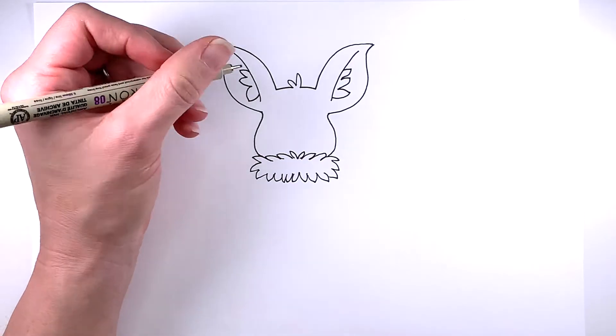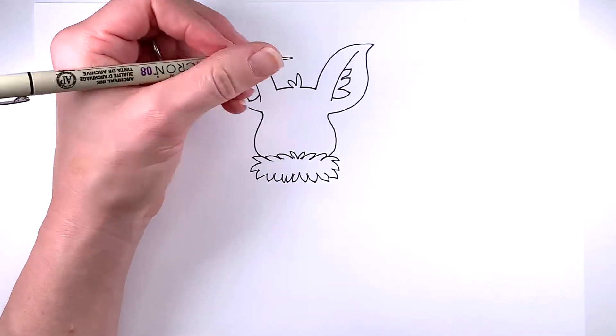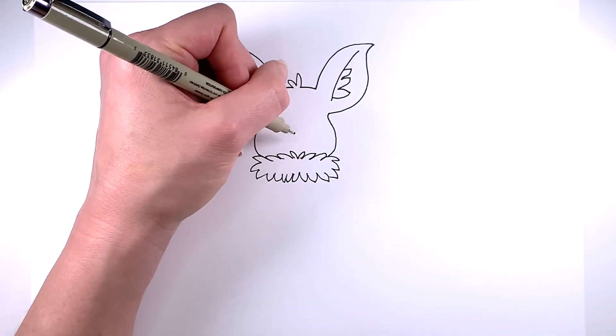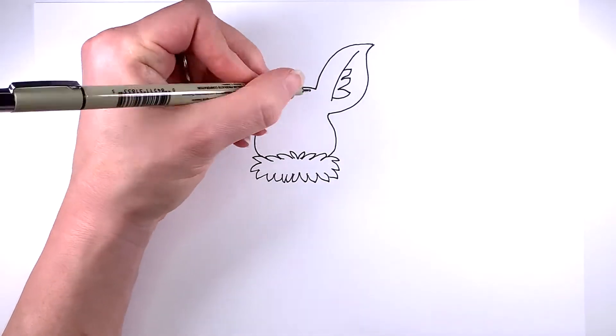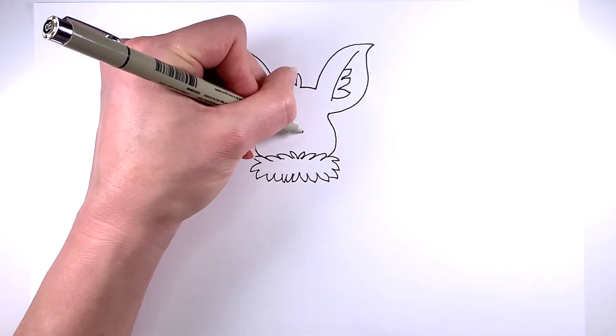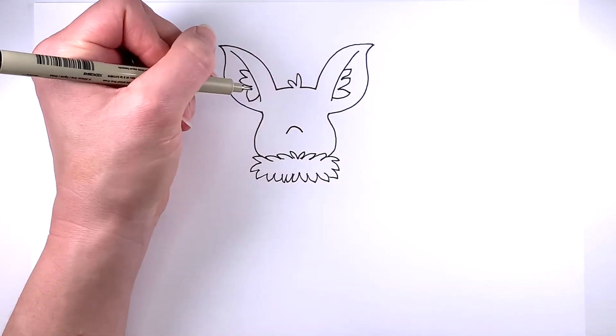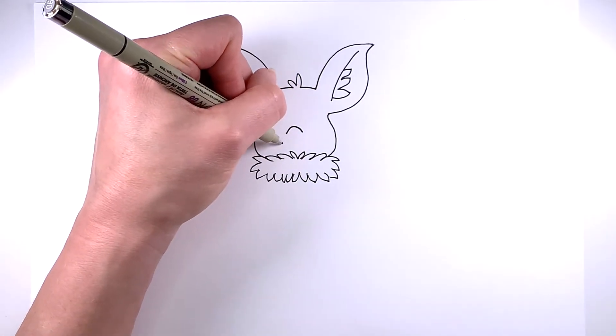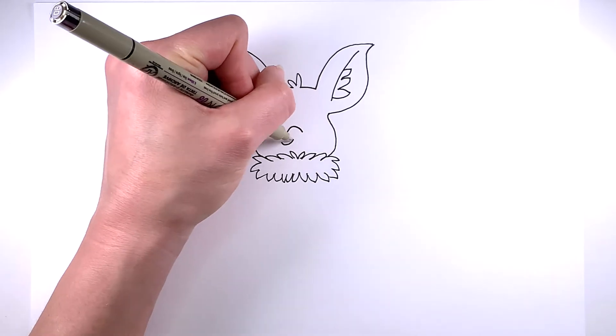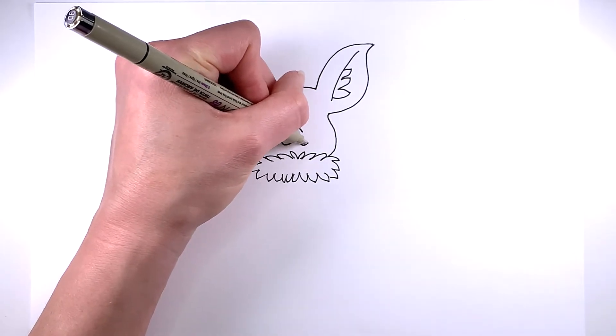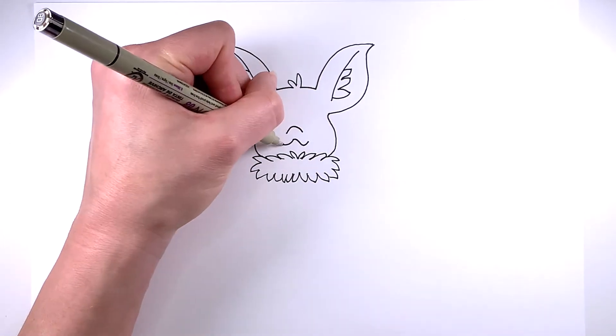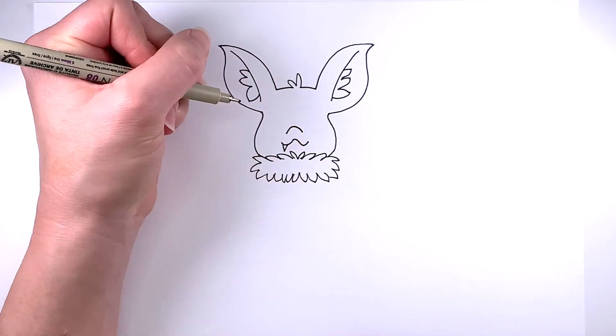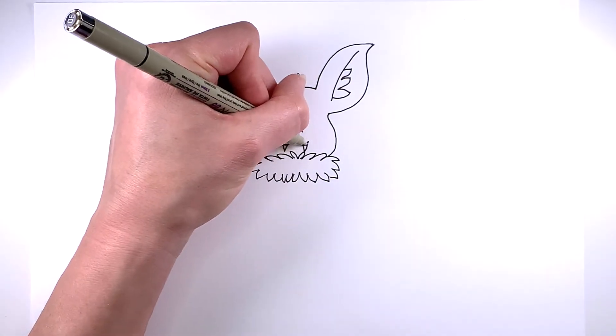And now I'm going to go ahead and start on his face. Bats have like this cute little upturned nose. So I'm going to show that there, just kind of an upside down U, followed by a hook, small curve, and another hook to make the mouth. And then I'll make some little sharp teeth there coming out of the mouth.